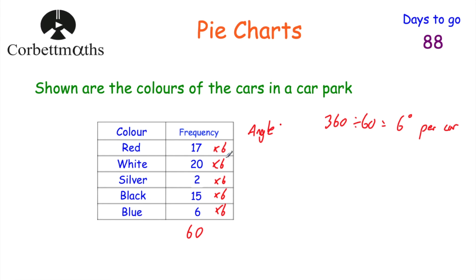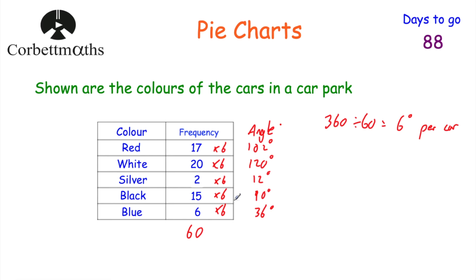The angles are: red 17 × 6 = 102 degrees, white 20 × 6 = 120 degrees, silver 2 × 6 = 12 degrees, black 15 × 6 = 90 degrees, and blue 6 × 6 = 36 degrees. We check: 102 + 120 + 12 + 90 + 36 = 360 degrees. That's correct!